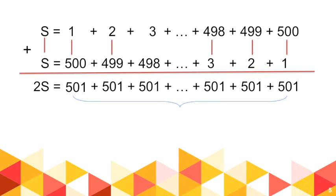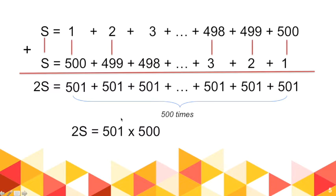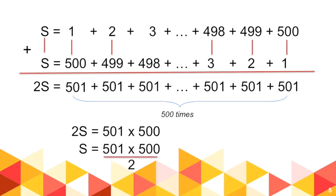There will be 500 instances of 501. So using symbols, we come up with this equation: 2S is equal to 501 times 500. Simplifying, since we're looking for the sum S, S equals 501 times 500 divided by 2, which gives us S equals 125,250. So the sum of the numbers from 1 to 500 is 125,250.